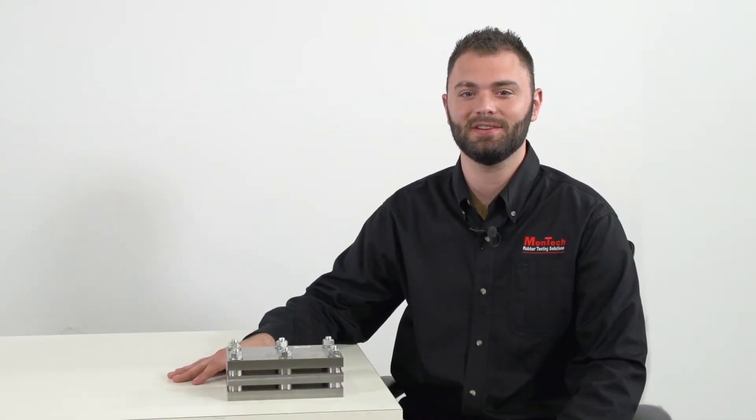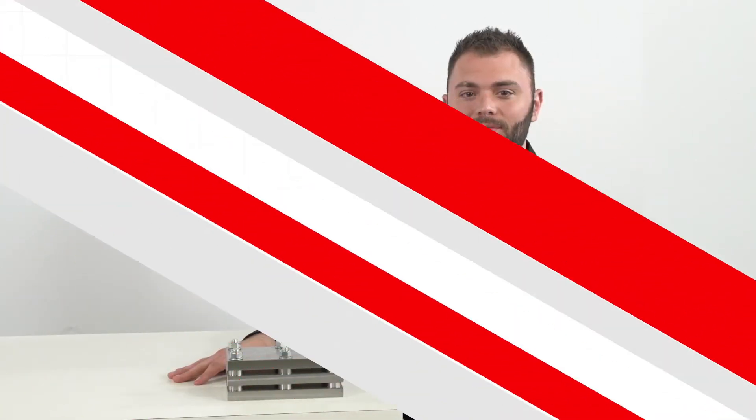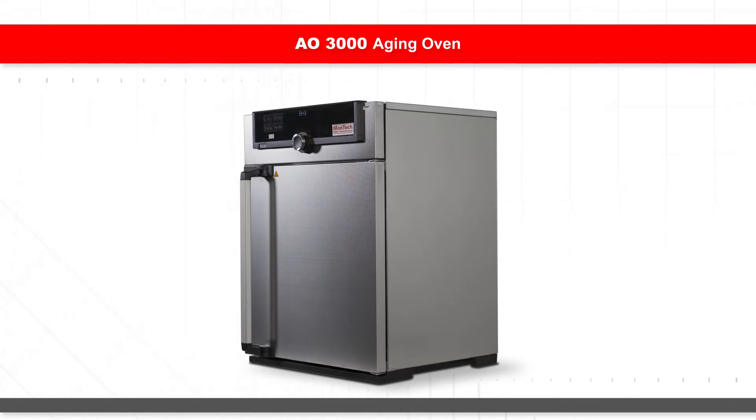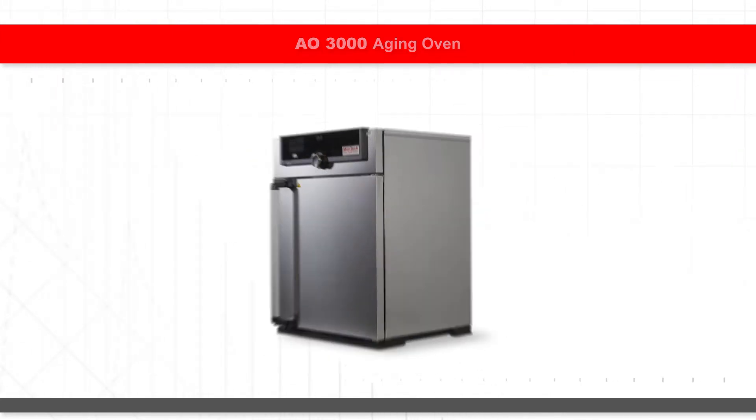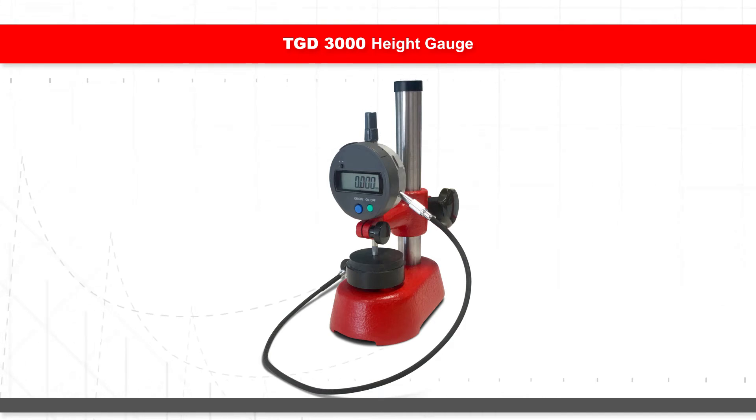CS3000 compression sets can be used with aging ovens like the AO3000 to test a material's performance under varying environmental conditions. The TGD3000 height gauge is also available to measure material height before and after compression to calculate the material's loss.